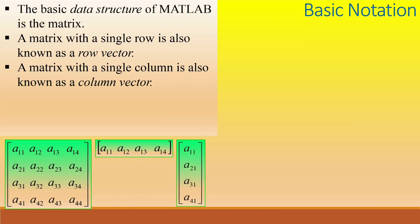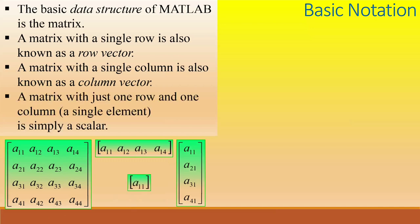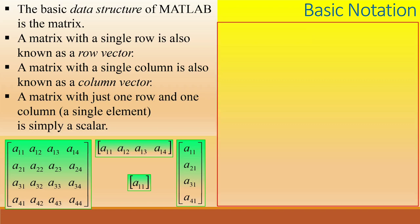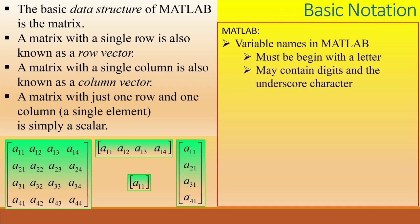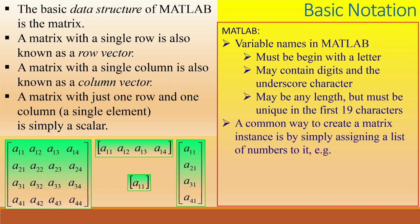A vector is a one-dimensional array. Examples are a row vector and a column vector. A single element or scalar is also stored as a one-by-one matrix or array. In MATLAB, different arrays must have distinct names. The name may be of any length but must begin with a letter, and may contain digits and the underscore character.